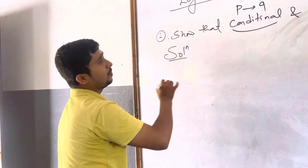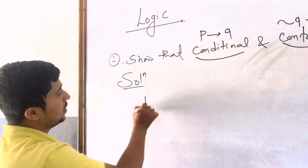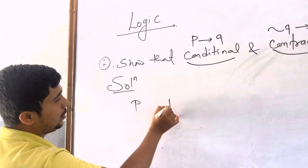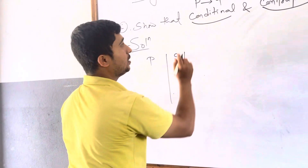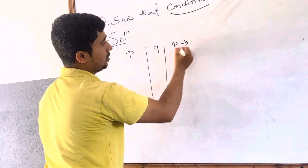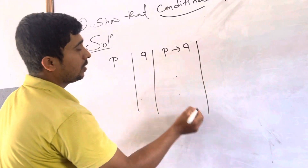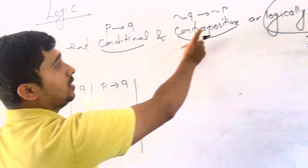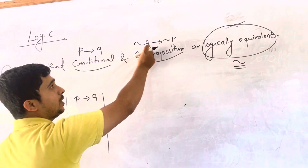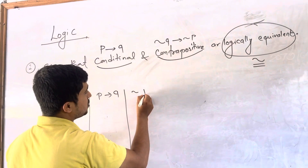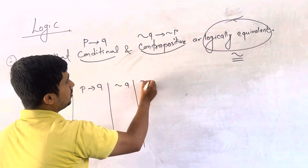Let's move into the table. First of all, how many statements are there? Two statements, P and Q. First we are going to find out the conditional, so write down P then Q. For contrapositive, I need negation Q and negation P, so write down negation Q then negation P.